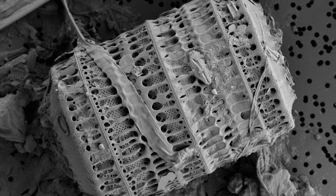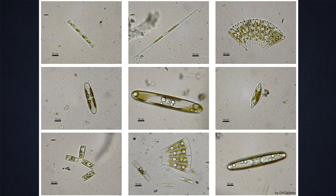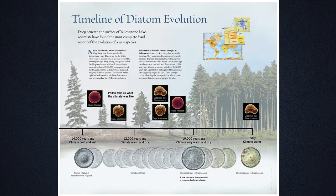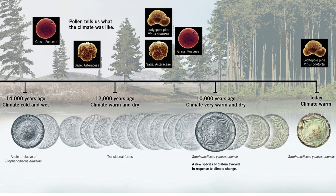Here are some freshwater diatoms, and you can see that they come as individuals or they form colonies — some species form colonies. One of the most beautiful examples of evolution being caught in the fossil record is in the diatoms that exist in Yellowstone Lake. The Yellowstone diatom evolved from an ancestor very similar to the modern-day Niagara diatom, the ones found in freshwater lakes including the lakes around Niagara Falls.